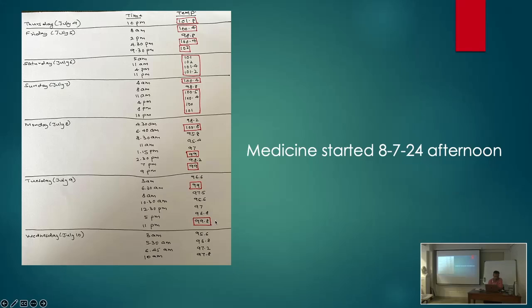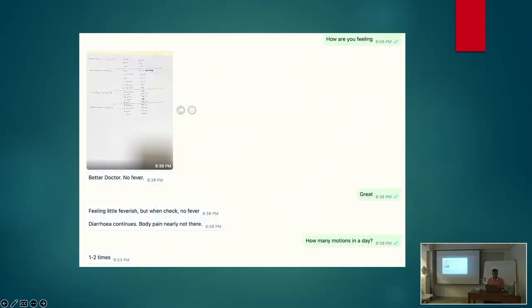From 11 o'clock you see the fever is 99, 99.2, then again next day it is 99 at 6:30, then has come down to normal. Then again at 11 o'clock, July 9th, it went to 99.8. On Wednesday it has been almost normal.